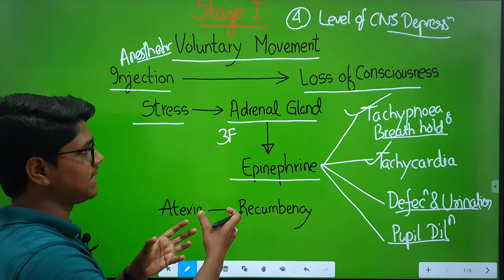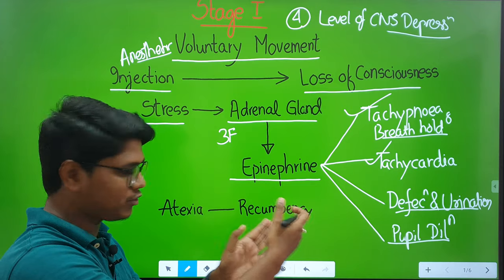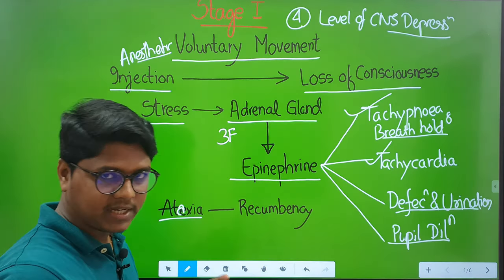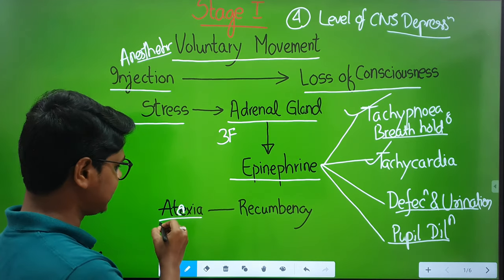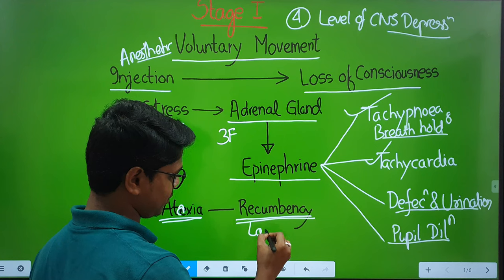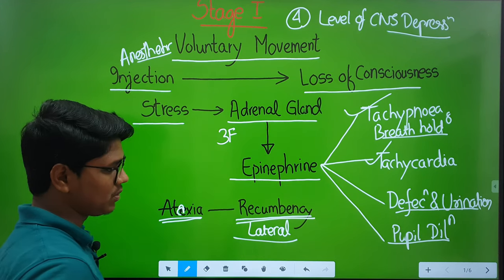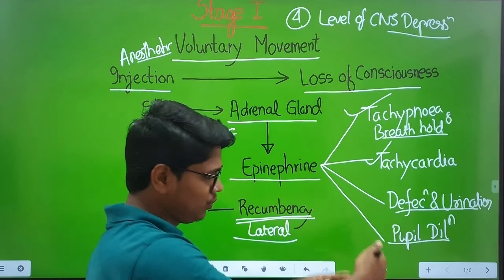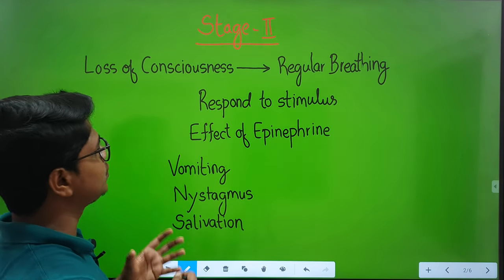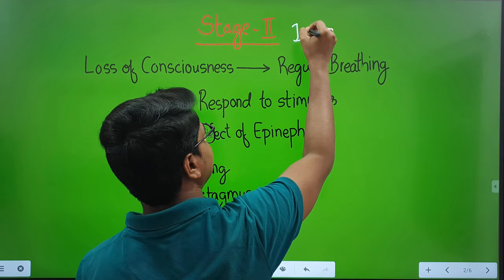When this stage progresses towards its end or progresses towards Stage 2, we will find ataxia — that means incoordination in gait. Then the animal will become recumbent, lateral recumbency usually. Here Stage 2 begins. Stage 2 is also known as the stage of involuntary movement.